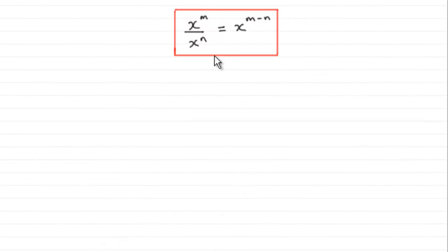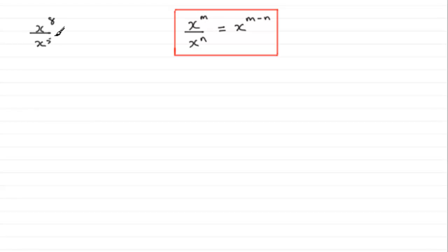Hi. In an earlier tutorial I showed you that providing you had two values to the same base — in this example x's — and you were dividing, the result was x to the power m minus n, where we simply subtracted the powers from one another. So for instance if we had x to the power 8 divided by x to the power 5, they're to the same base x, so we just subtract the powers: 8 take away 5 is 3, giving x to the power 3, or x cubed. It doesn't matter whether we're dealing with x — it can be any other letter, like y — as long as the two base values are exactly the same.